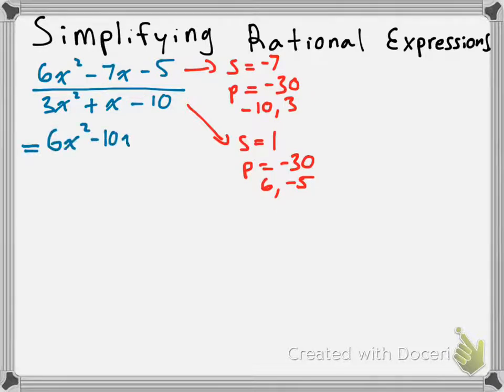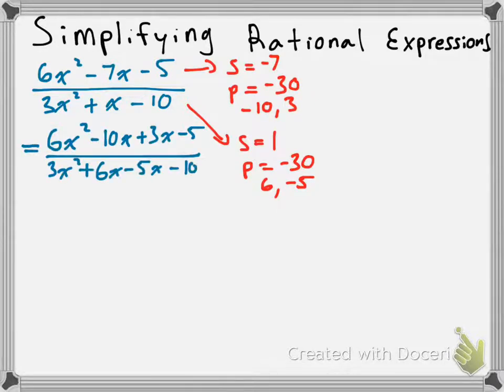So, we are going to split the quadratic on the top and the quadratic on the bottom. We get 6x squared minus 10x plus 3x minus 5, over 3x squared plus 6x minus 5x minus 10.